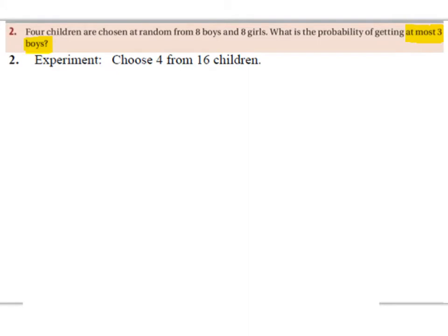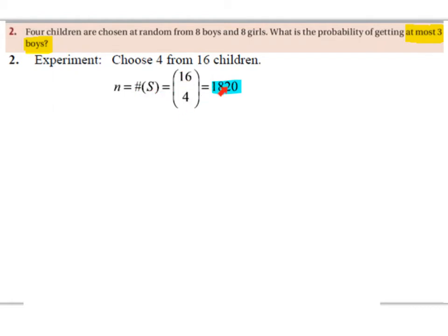The experiment is to choose four from 16 children. Eight plus eight gives us 16 children in total, and we want to choose four of them, so we're going to do 16 choose 4. n is equal to the cardinal number of elements in the sample space S, which is 16 choose 4, which is 1820. This is our total, or our denominator, when we put our fraction together for probability.